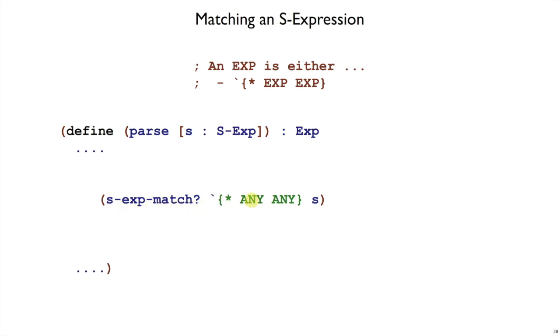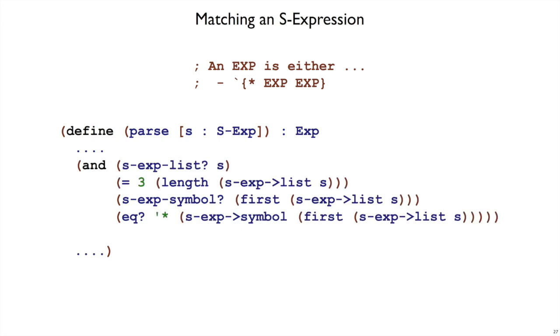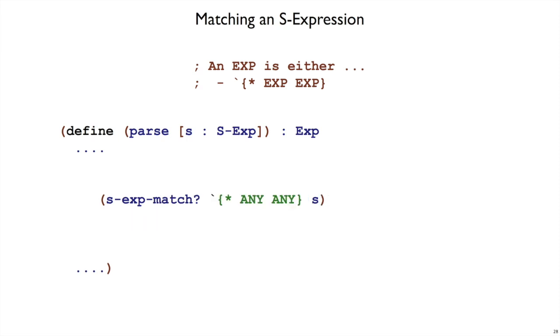s-exp-match? takes two S expressions, but it treats the first one as a kind of pattern to match against the second one. And in that first S expression, most things are literal, like the curly braces here mean that s has to be list-like and the star here means that s needs to start with that star. But ANY in all caps is a special word to s-exp-match?, and that means allow anything. So this one line does all of the work that was on the previous slide. Which is not all of the work, but it's a lot simpler to write this much.